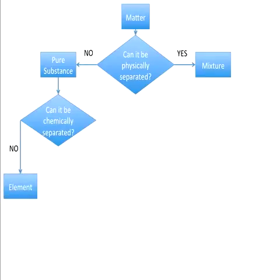If not, then it's an element. If you have iron, there's no way you can make it anything other than iron through a chemical reaction. If you can, then it's a compound. If you have water, H2O, you can do a chemical reaction to break it down to hydrogen and oxygen.